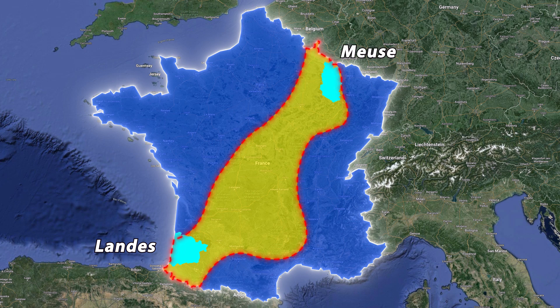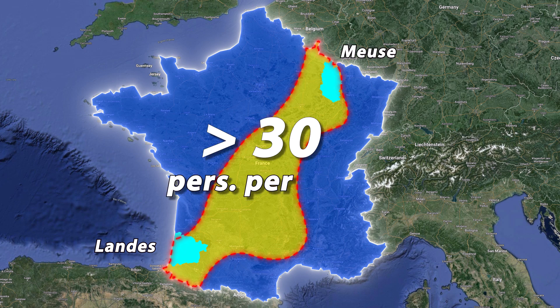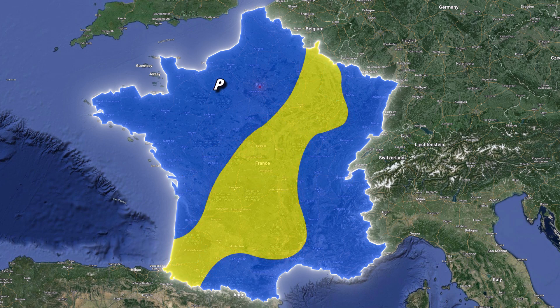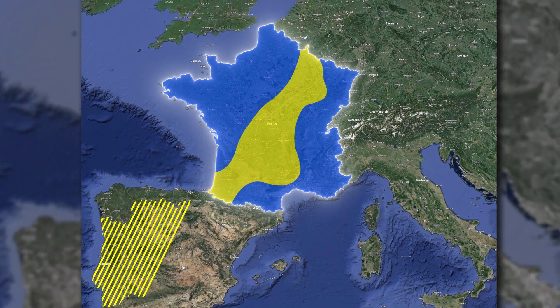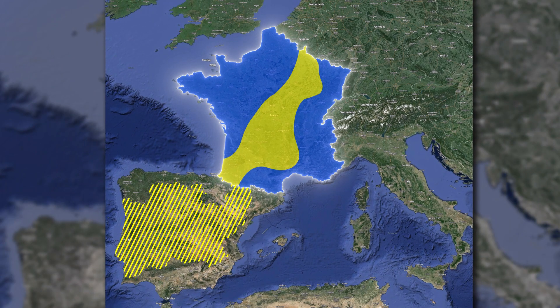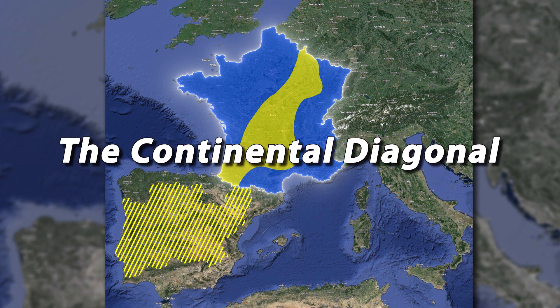The diagonal's population density is less than 30 people per km², whereas cities like Paris, Lyon, Lille, and Toulon have more than 1,200 people living per km². This diagonal of low population density is so apparent that it extends into Spain and Portugal too, and is known as the Continental Diagonal.